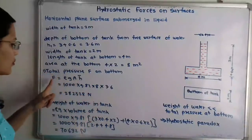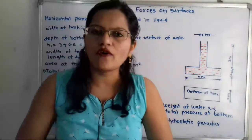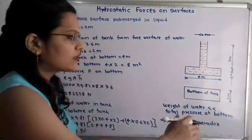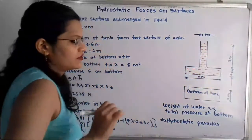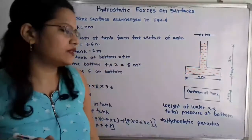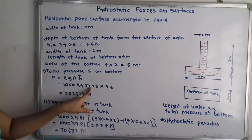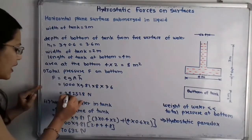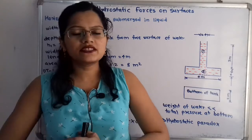The formula for total pressure is F = ρgAh̄, where h̄ is the distance of the center of gravity from the free surface of water. Since the bottom is horizontal, h̄ equals 3.6 meters. So F = 1000 × 9.81 × 8 × 3.6 = 282,528 newtons. This is the answer to the first question.